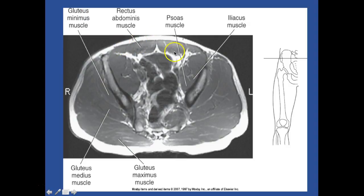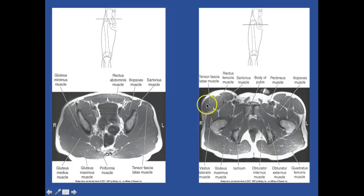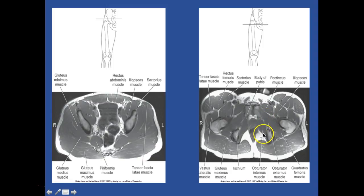Looking here is your rectus abdominis muscle, your psoas. You can see we're pretty high - so we're at the psoas and your iliacus right along the wing there. So your gluteus maximus, gluteus medius, and gluteus minimus. Looking here: tensor fasciae latae, we've got your rectus femoris with your sartorius coming across the body of your pubis, and the pectineus with your iliopsoas. We're down low, so it's iliopsoas. We have your quadratus femoris muscle and your obturator externus. Your quadratus femoris is right there, and your obturator externus is here. This is your obturator internus muscle. This is your ischium and your gluteus maximus with your vastus lateralis there. Gluteus minimus, medius, and maximus, piriformis - that's what I want you to see.